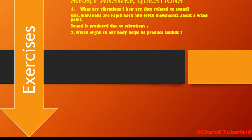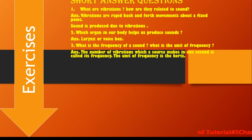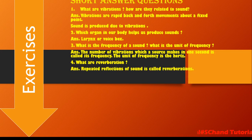Which organ in our body helps us to produce sound? That is the larynx, or the voice box. What is the frequency of sound and what is its unit? Frequency is the number of vibrations which a source makes in one second. The unit of frequency is the Hertz, or second inverse.